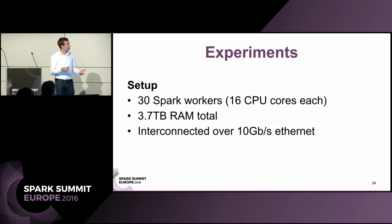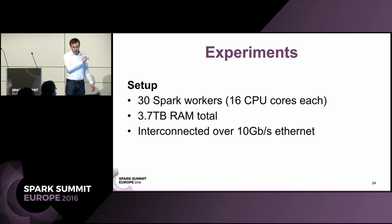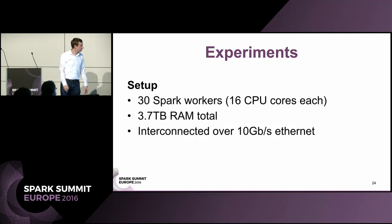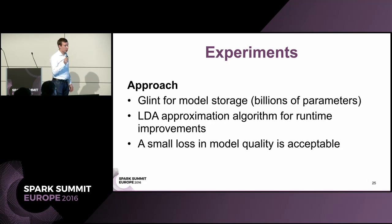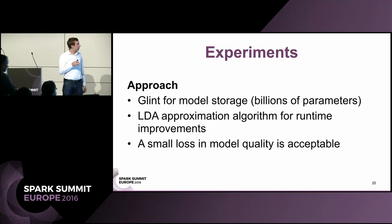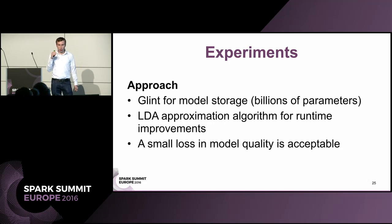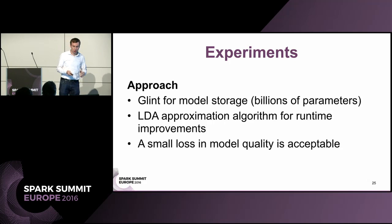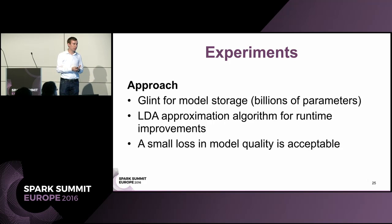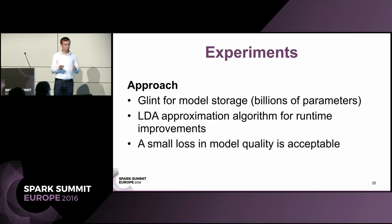In industry this is really small, but in the academic world we don't have many resources. We have 3.7 terabytes of RAM in total, and all nodes are interconnected over 10 gigabit per second. Our approach uses Glint to store the topic model, which has billions of parameters at 1,000 topics. To get it to run in a feasible time we use an LDA approximation algorithm — I won't go into detail, but because it's an approximation we may lose some model quality, which is acceptable since we can scale much further than other methods.